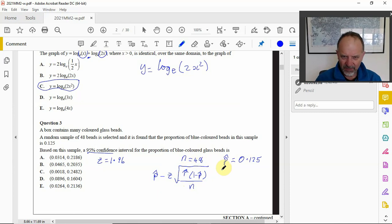When we put those numbers in you get 0.125 minus 1.96 times the square root of 0.125 times (1 minus 0.125) over 48.